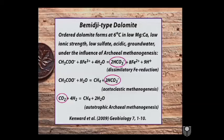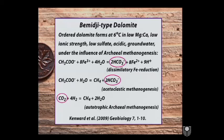The only ordered dolomite I know of forming at low temperature in the world today is Bemidji-type dolomite, and it occurs at a waste dump site in northern Minnesota where oil was spilled. This is six-degree water — low magnesium-calcium ratio, low ionic strength, basically fresh water, low sulfate, quite acidic groundwater. Under the influence of archaea-driven methanogenesis there are three reactions: dissimilatory iron reduction and two types of methanogenesis — one a sink for CO2 and the other two drivers of alkalinity. Ordered dolomite is forming at six degrees, both in nature and in the laboratory using those same waters. I love this because this water is a good description of Glacial Lake Harland water.